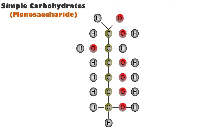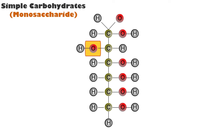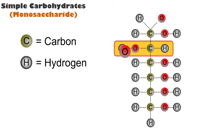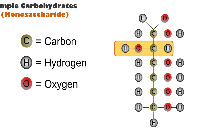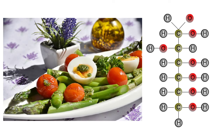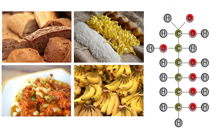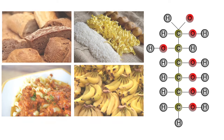Carbohydrates are organic molecules with the general formula of CHO in a 1 to 2 to 1 ratio. In this formula, C stands for carbon, H for hydrogen, and O for oxygen. Although carbohydrates constitute only 1 to 2% of cell mass, they provide the raw fuel for cellular energy production.